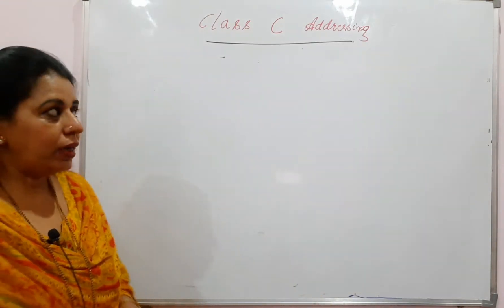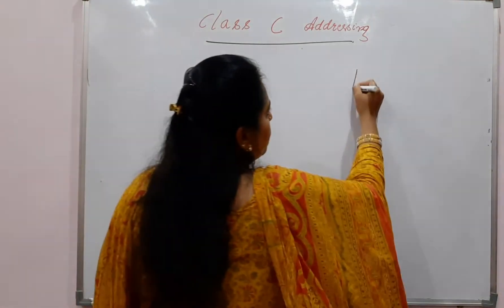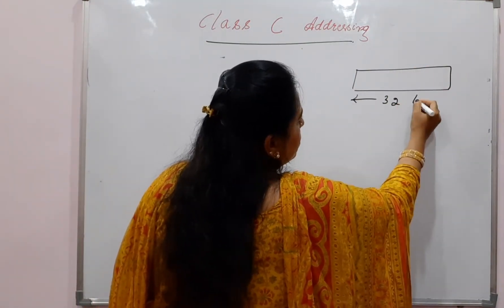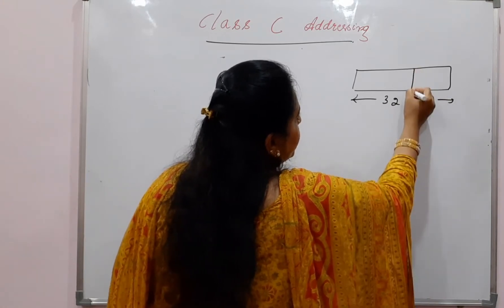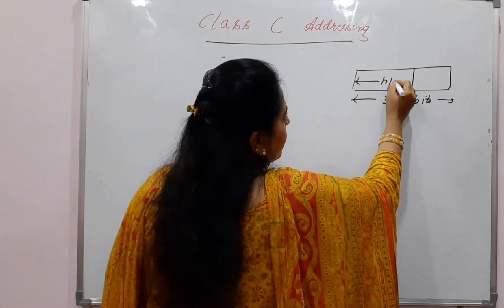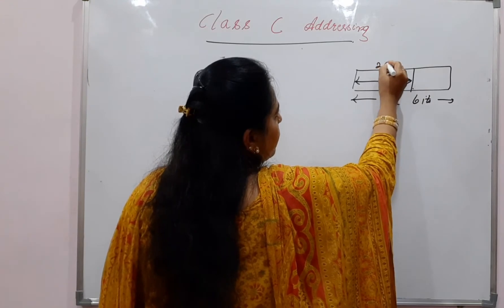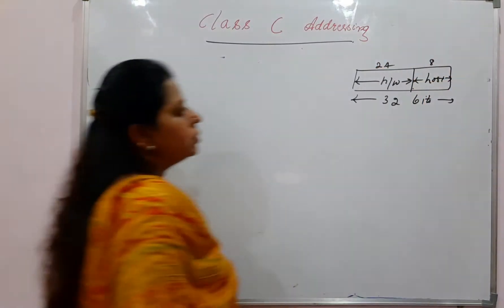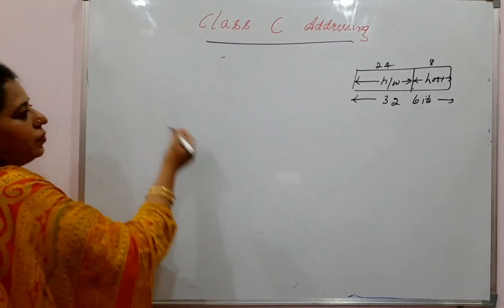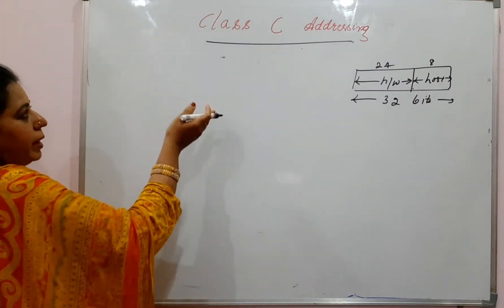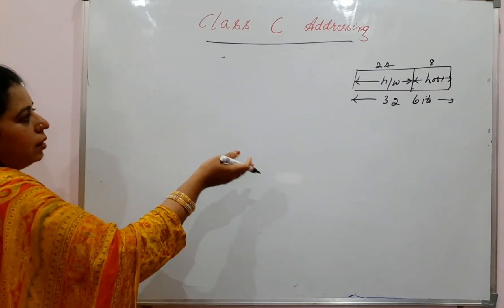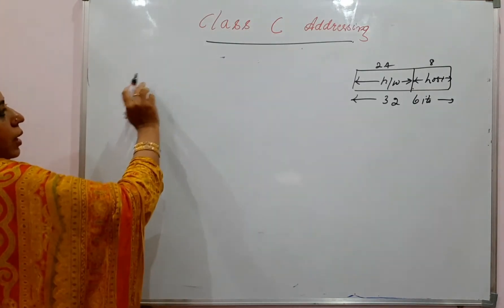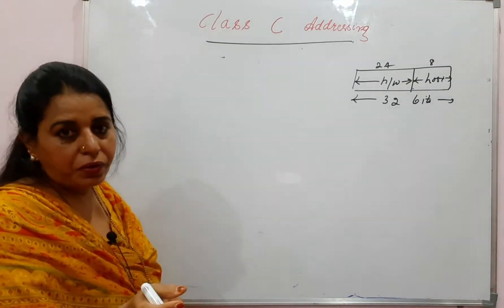In Class C addressing, out of the total 32 bits, 24 bits denote the network part and 8 bits denote the host part. Given an IP address in Class C addressing, you are going to determine the first address and the last address.